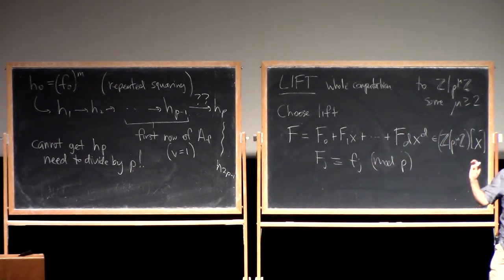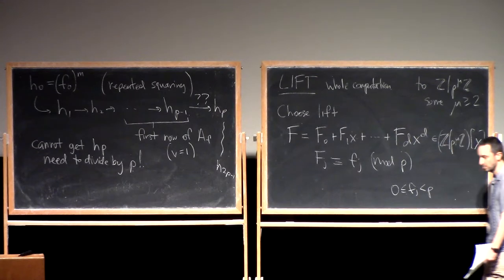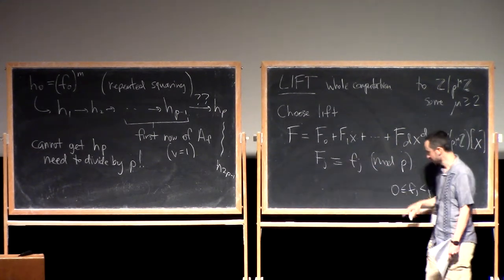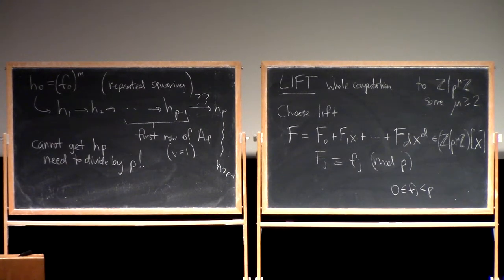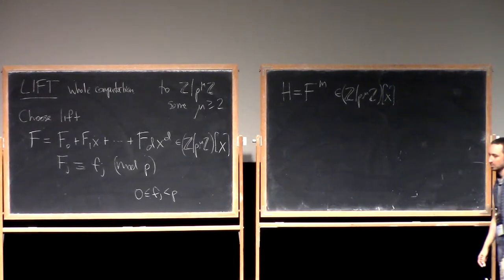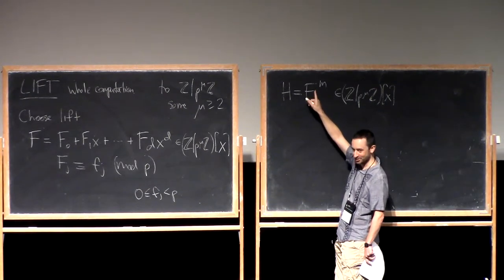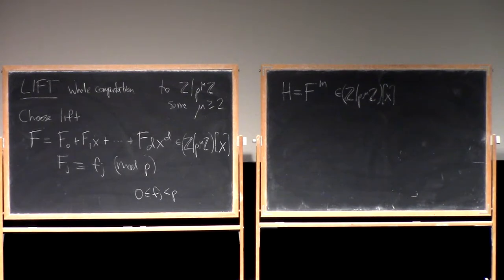By lift I mean each F_j is congruent to our original f_j modulo p. Any lift is fine — you just choose it once and for all. The most obvious thing to do, if the f_j's are in the range 0 to p, is to take capital F to be literally the same integers, but now thinking of them modulo the higher power of p. We put capital H to be capital F to the m, also a polynomial modulo p^μ. It has to be the m-th power of this specific lift — you can't just pick another lift of little h.